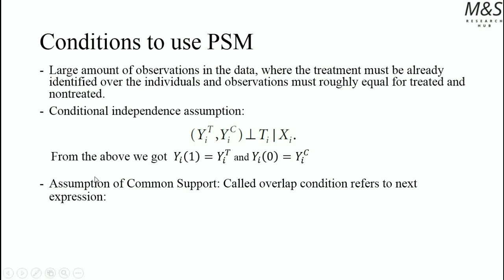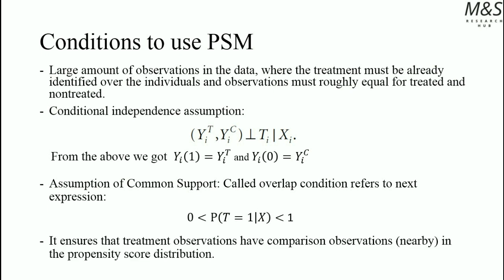We also need the assumption of common support, called the overlap condition, which refers to the following expression. We need to ensure that the estimated probability of being a participant given some covariates is between 0 and 1, because if the probability is exactly 0 or 1 we cannot construct the statistical comparison group. This assumption ensures that the treatment observations have comparison observations nearby in the propensity score distribution.